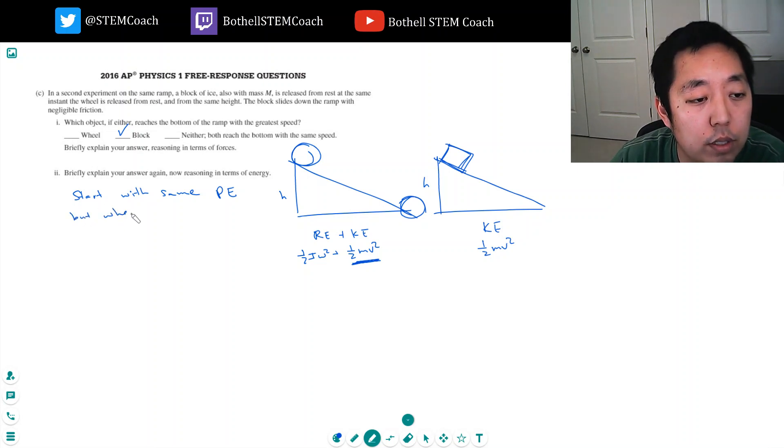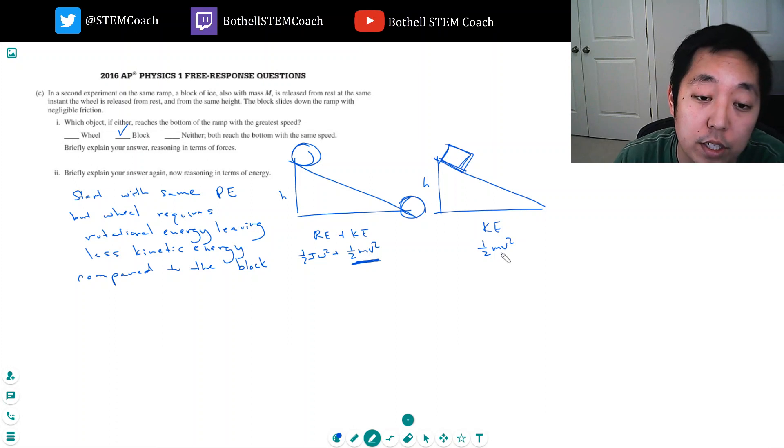But wheel requires rotational energy, leaving less kinetic energy compared to the block. So in other words, the way you think of it is the block will have more kinetic energy. Because the block will have all of its potential energy converted to kinetic. Whereas for the wheel, only some of it will be converted to kinetic energy. And that implies V is larger for the block because it has a larger kinetic energy.